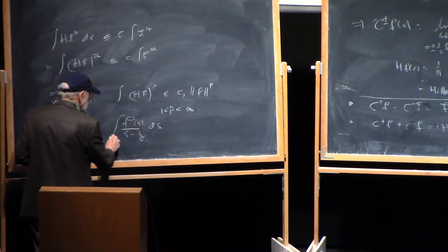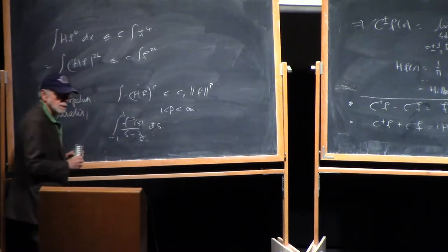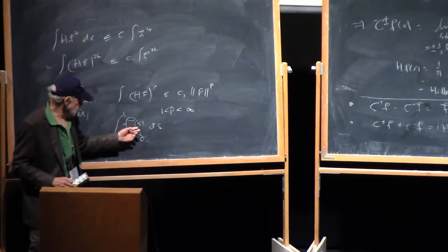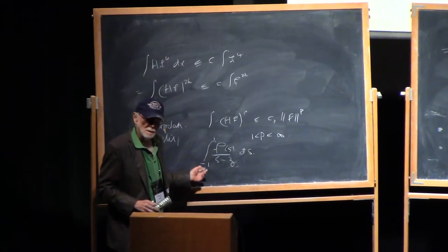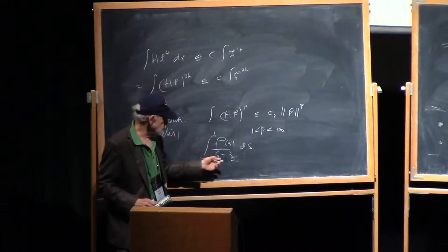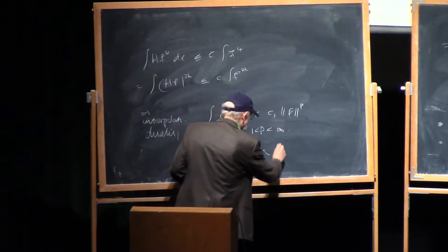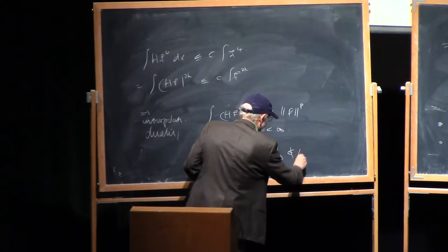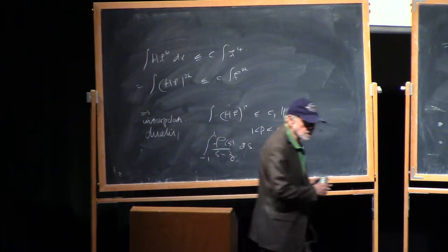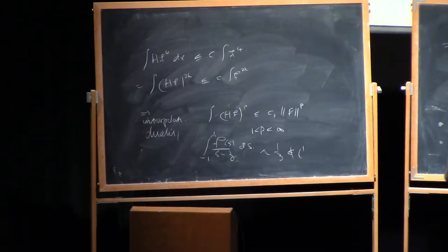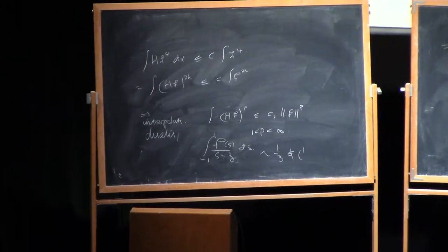Suppose f of s is compactly supported in minus 1 and 1. If this is an L1 function on the interval from minus 1 to 1, this behaves like 1 over z, which does not belong to L1, so it's obvious. It does belong to weak L1, but let me not go there.